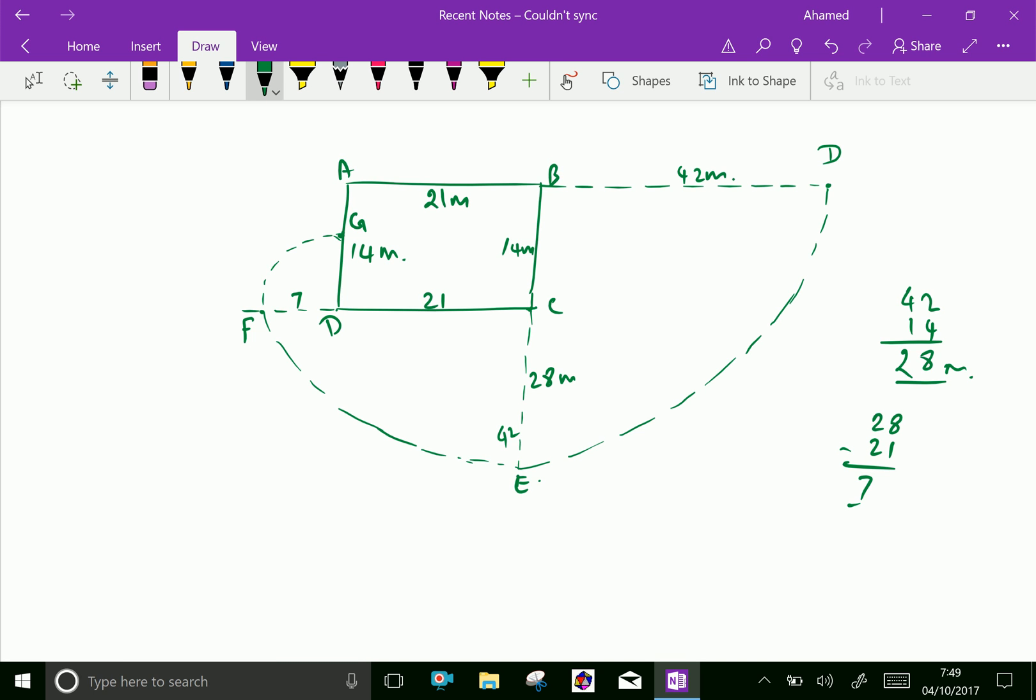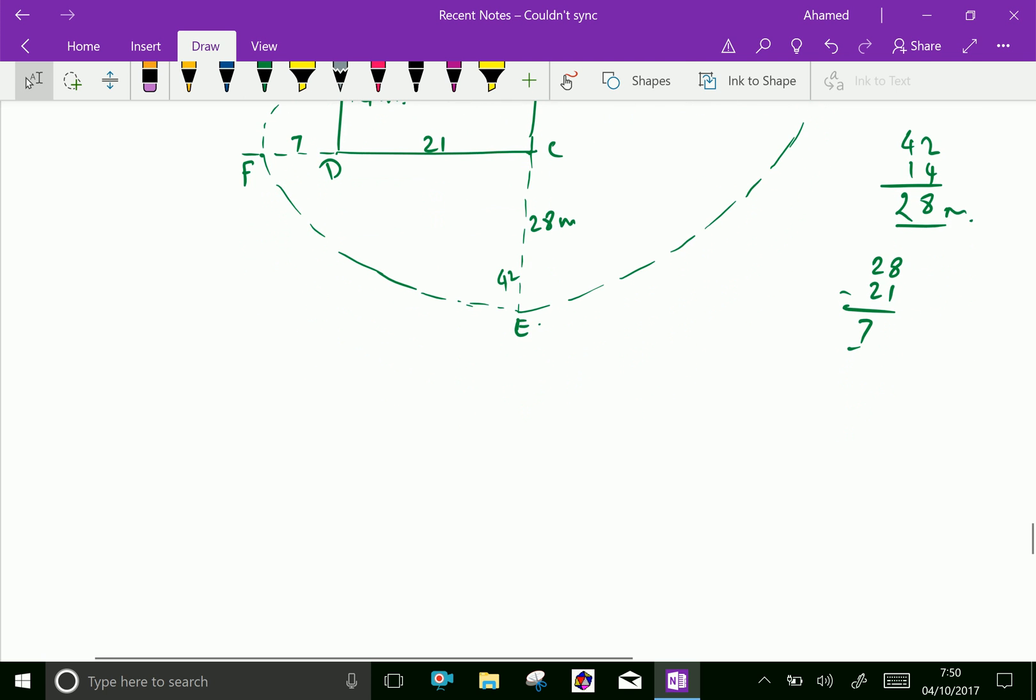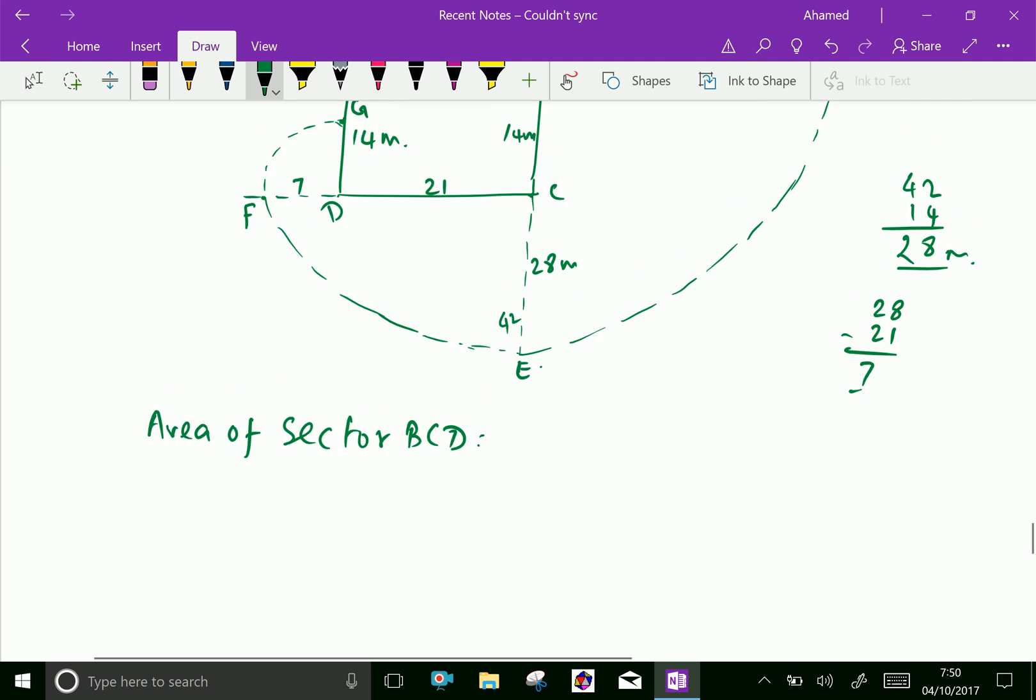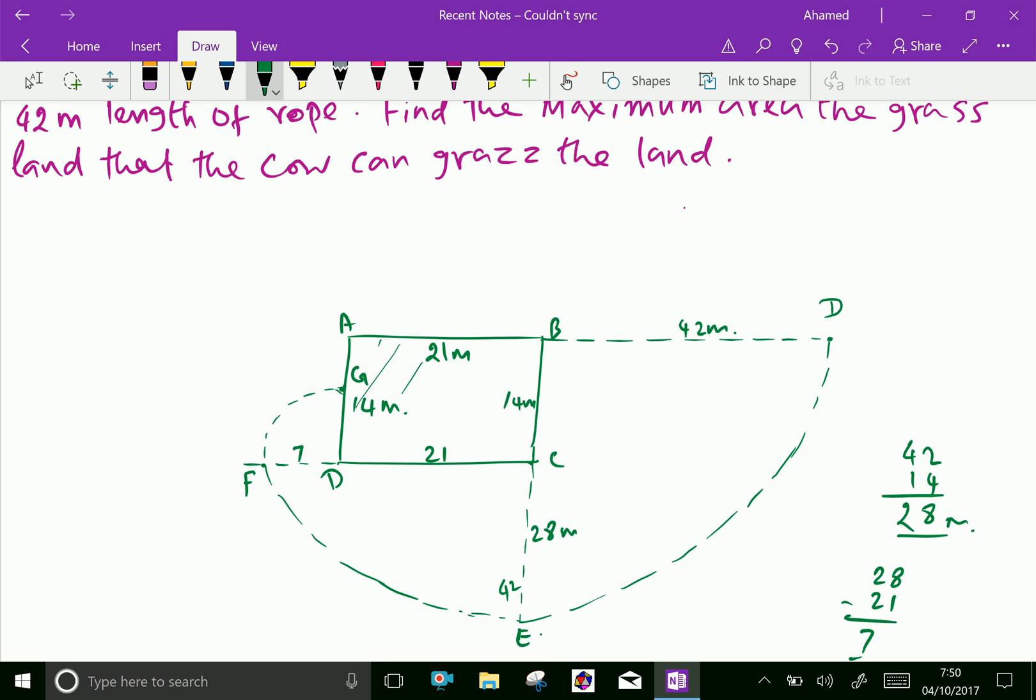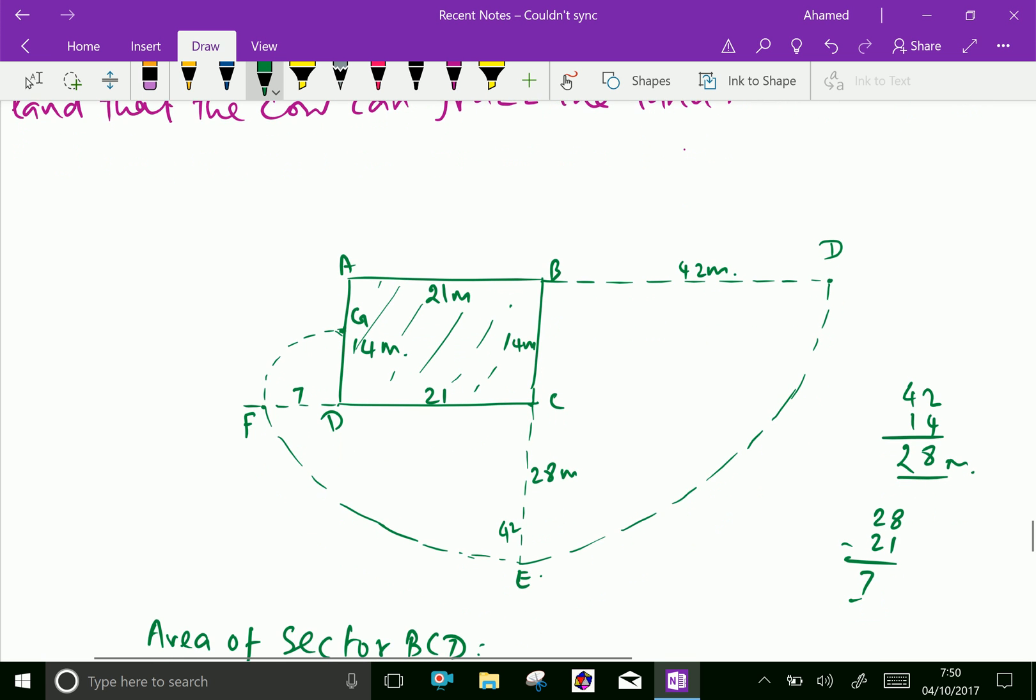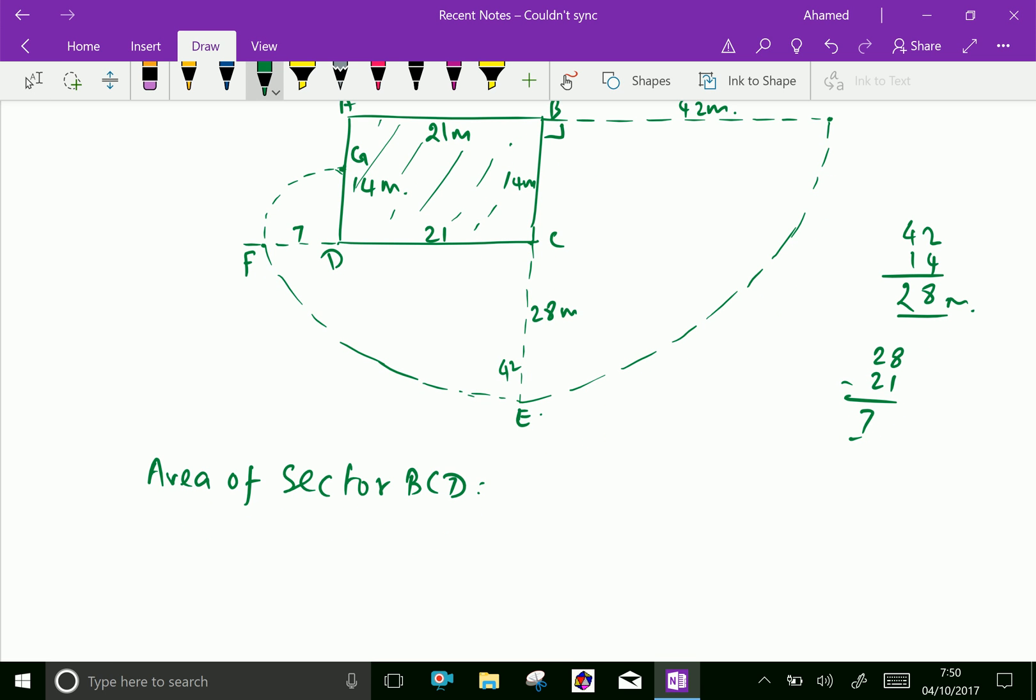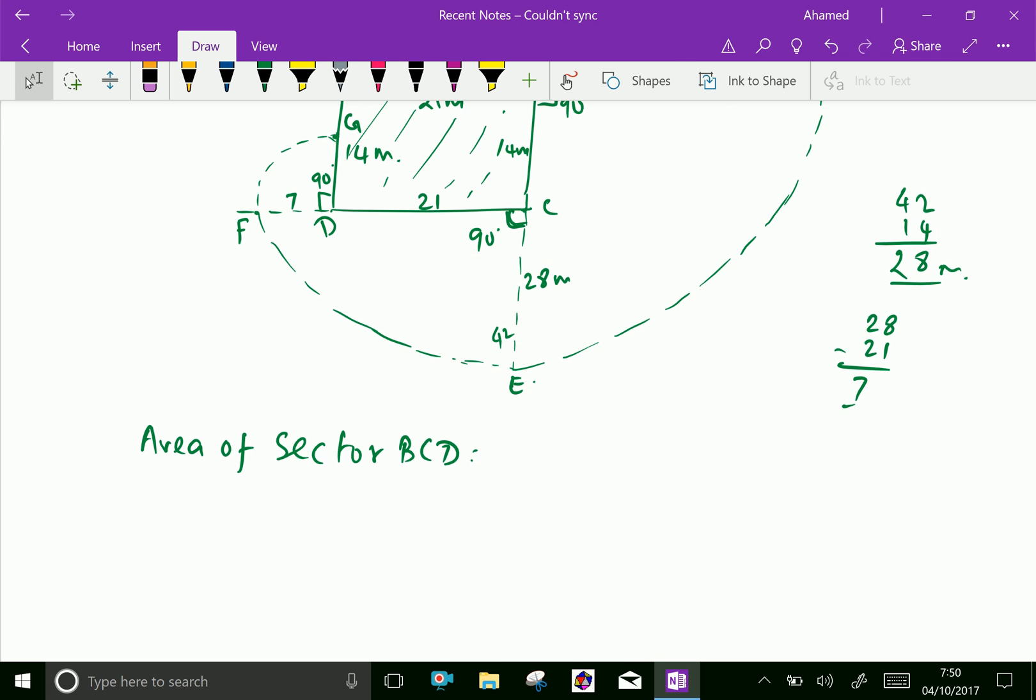Here, first, let us find the area of each sector, first sector BCD. Here, this is the land which is fenced. The cow cannot go inside this land. Now, the area of sector BCD. Here, everywhere is 90 degrees. This is a quarter circle.